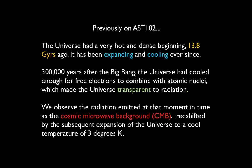Previously on Astronomy 102, we found that the Universe had a very hot and dense beginning 13.8 billion years ago, and has been expanding and cooling ever since. 300,000 years after the Big Bang, the Universe had cooled enough for free electrons to combine with atomic nuclei, making the Universe neutral and transparent to radiation — photons no longer scattered off charged particles and could travel freely through space. We call this the surface of last scattering.